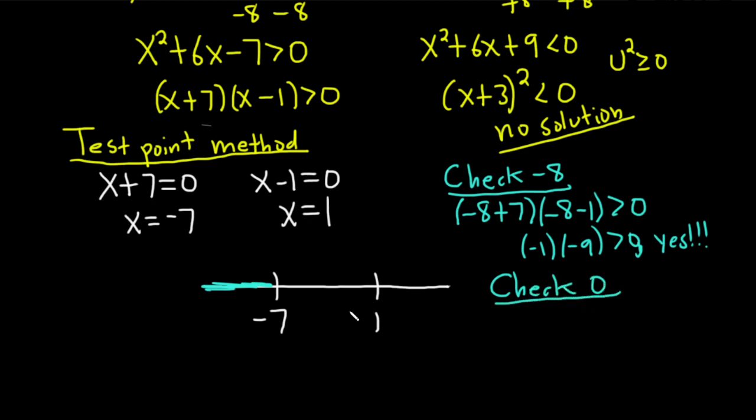Now we need a number between negative 7 and 1. So we can check 0. There's a trick, by the way. I basically know this one's not going to check. And this one is. But that only works when your factors are linear like this. So let's just go ahead and check all of them for completeness. So 0 plus 7, and then 0 minus 1 greater than 0. Negative 7 greater than 0. No. It's an epic fail. So we don't shade here because it's not true.